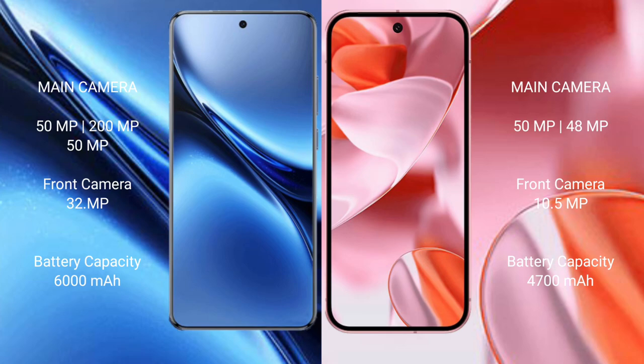Vivo X200 Pro features a rear triple camera setup of 50MP plus 200MP plus 50MP, and a 32MP front camera. Google Pixel 9 has a rear dual camera setup of 50MP plus 48MP, and a 10.5MP front camera. Vivo X200 Pro has a large battery with 90W fast charging support, while Google Pixel 9 has a 4000mAh battery with 25W fast charging support.